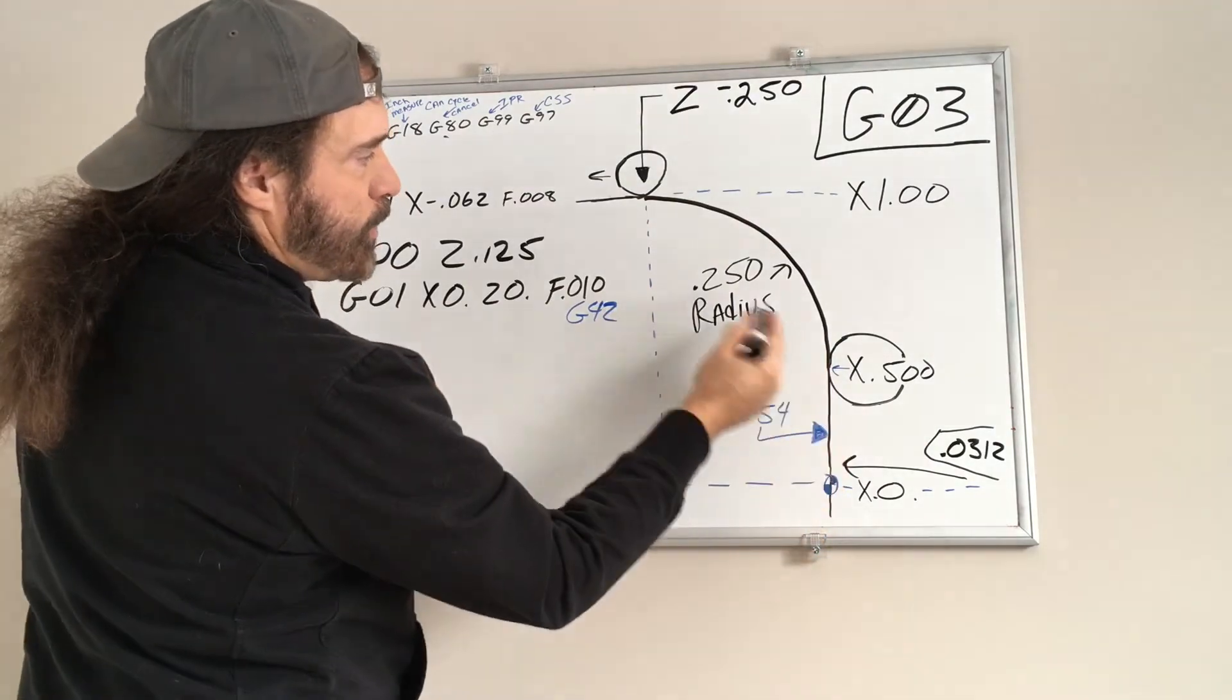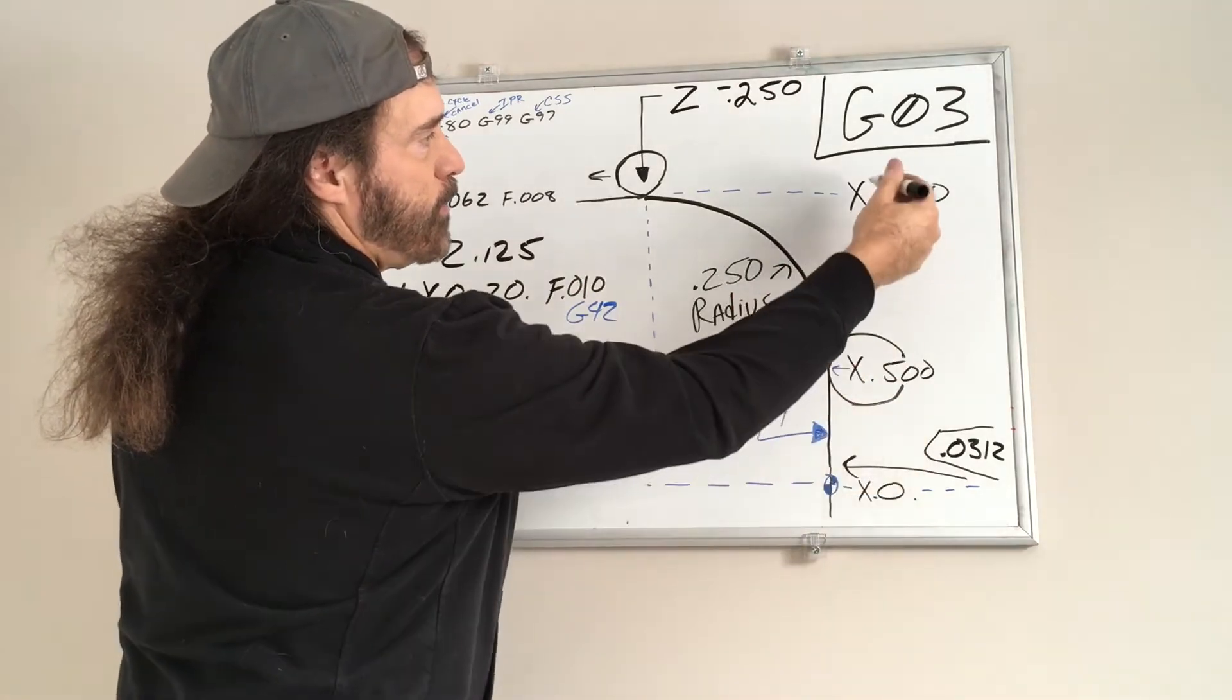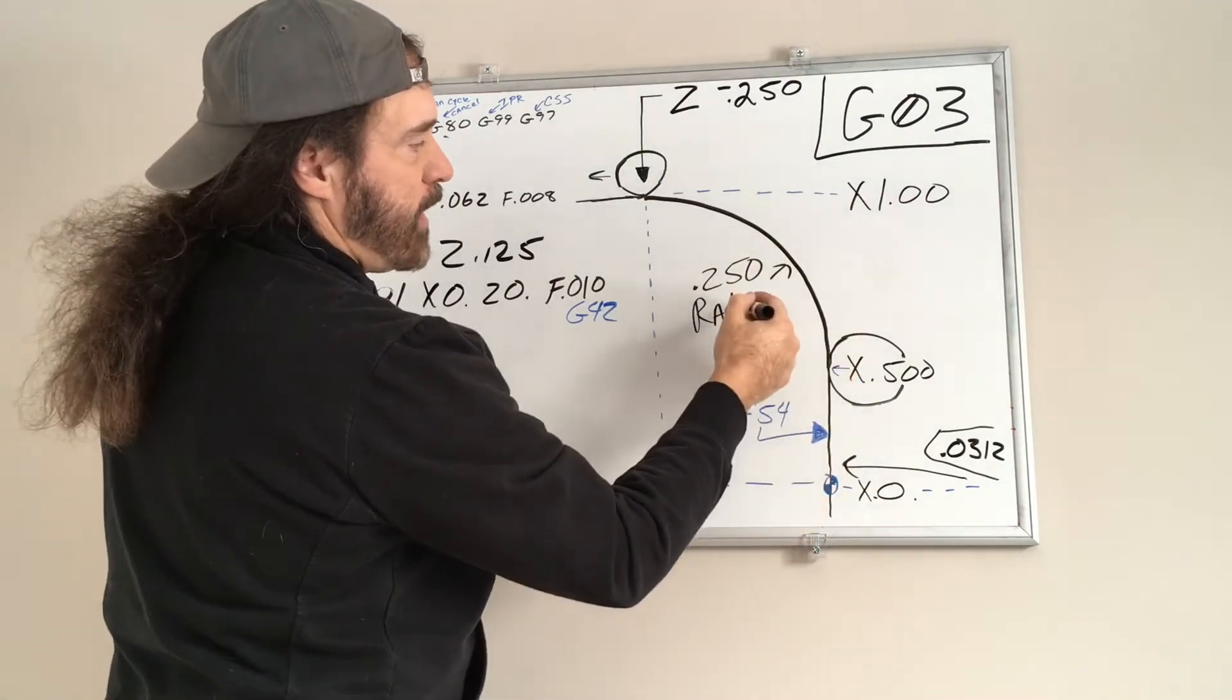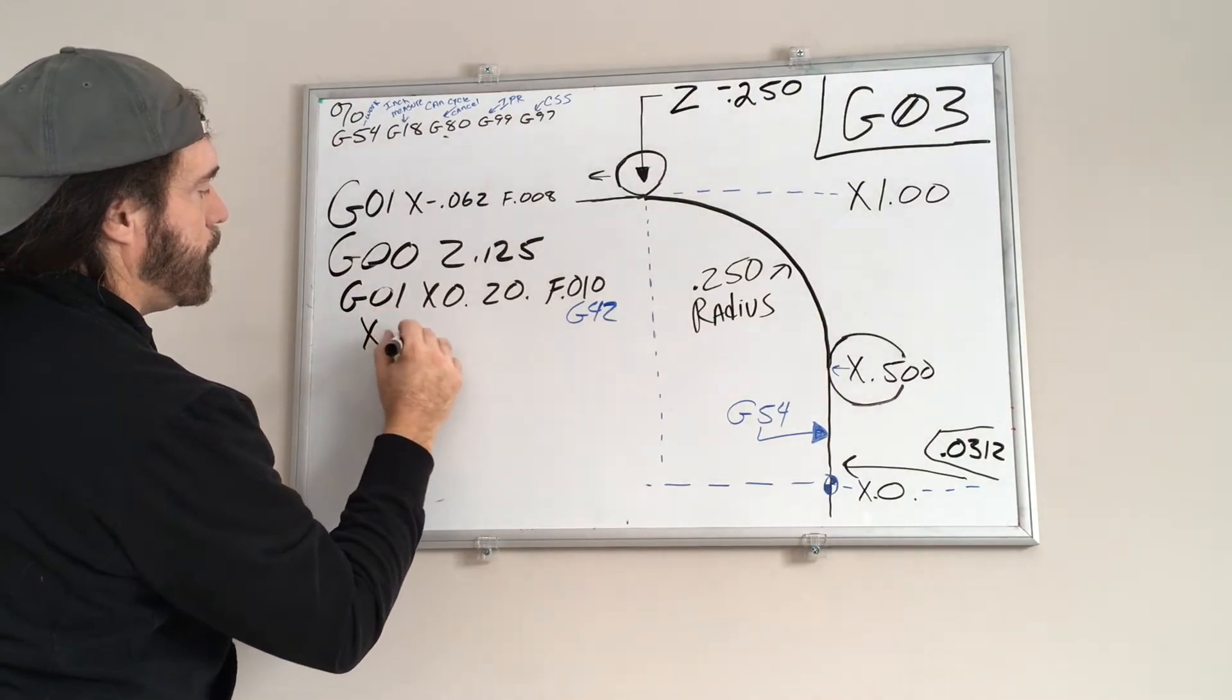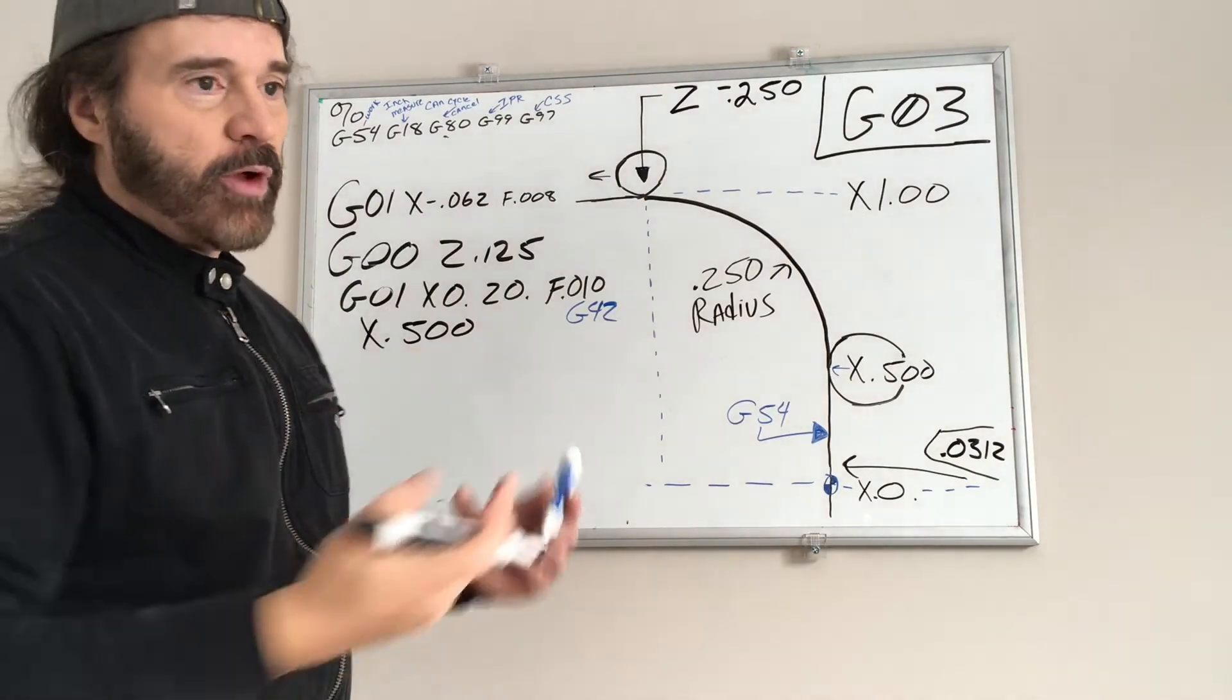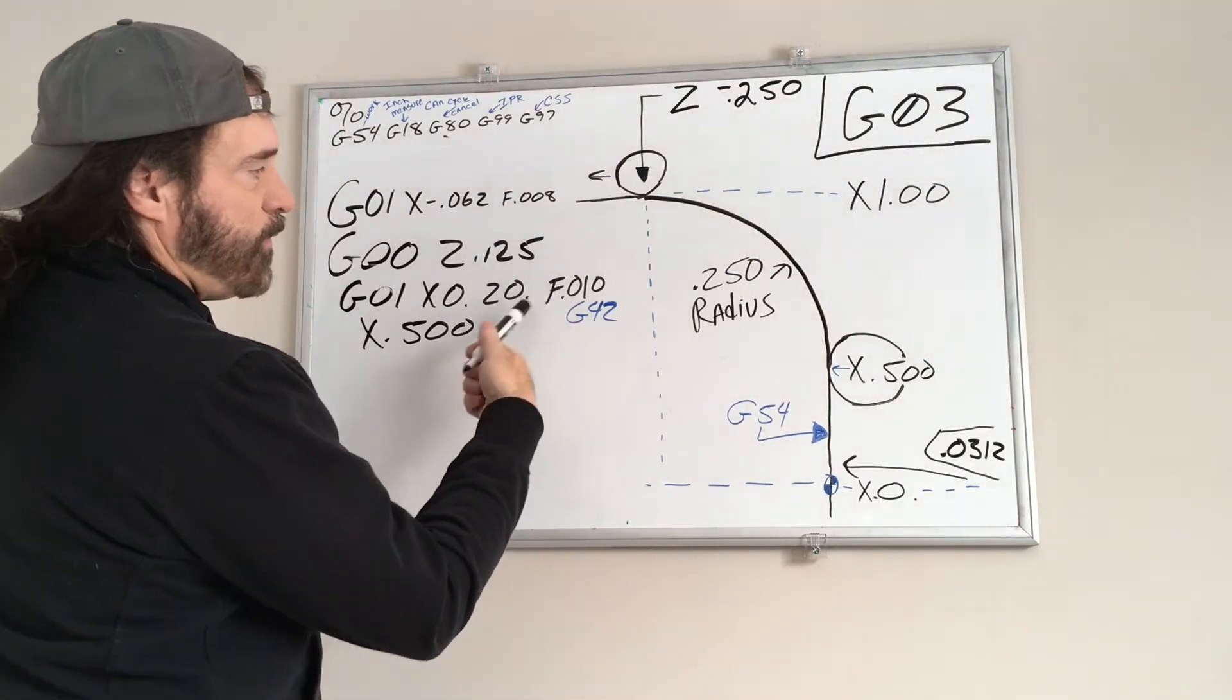We're going to turn on cutter comp to G42 because we're on the outside. Now we're going to do a 250 radius and remember everything's doubled in X. So we're going to subtract 500 from our finished dimension. So our finished dimension is 1 inch, so I'll subtract 500. So we go to X 0.500. And once you activate G01, you don't have to keep writing it in every line. You can, but you don't have to.